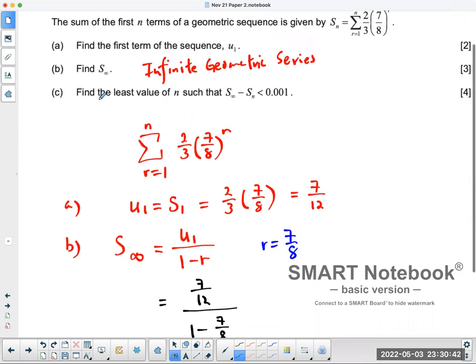Part c, find the least value of n such that the sum of the infinite geometric series minus the sum up to the value of n is less than 0.001.